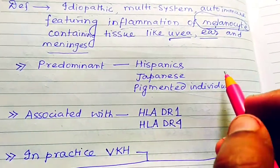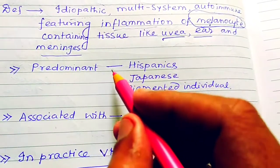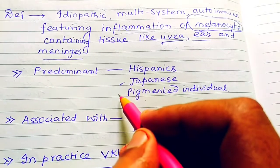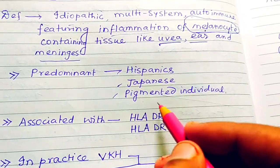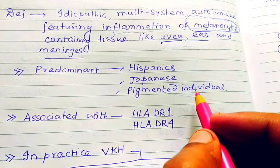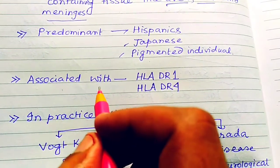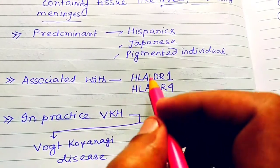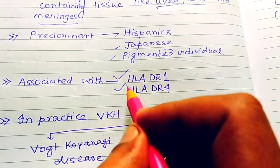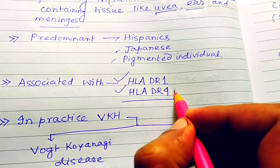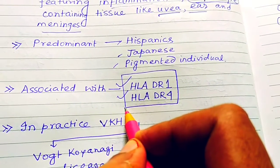This disease is predominant in Japan, in Japanese people, in Hispanics, and in pigmented individuals. The HLA associations are HLA-DR1 and HLA-DR4.